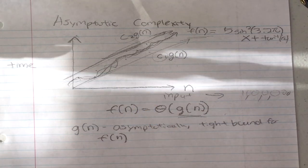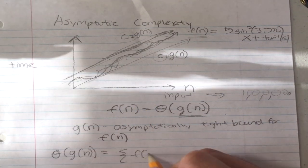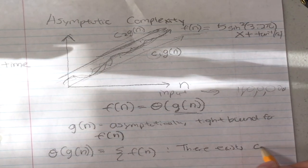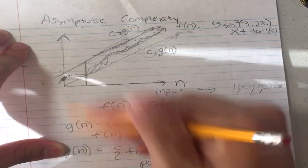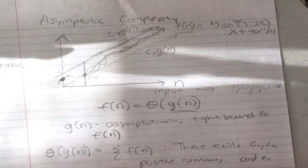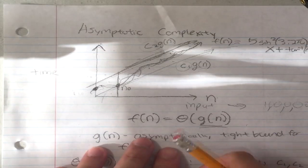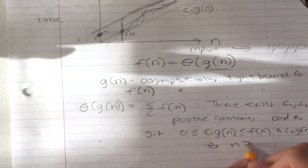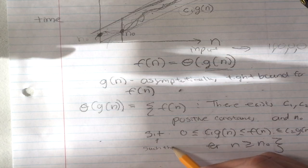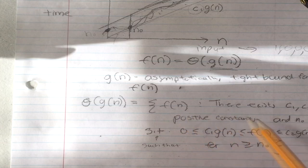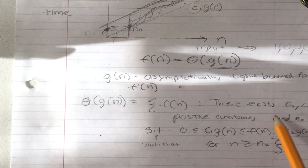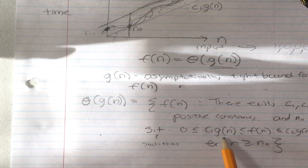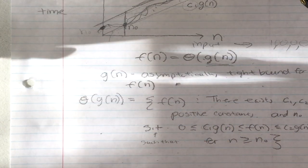Theta g(n) equals f(n) if there exist positive constants c1, c2, and n₀ — a starting point where they all connect — such that c1·g(n) ≤ f(n) ≤ c2·g(n) for all n greater than or equal to n₀. So f(n) is between these two bounds for all n ≥ n₀.